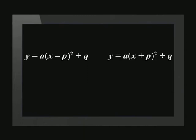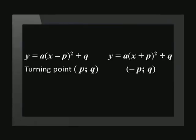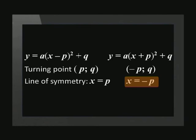Remember, the standard form that you are required to use has a plus p. This form of the equation has an effect on the equation of the axes of symmetry, and thus the coordinates of the turning point. The coordinates of the turning point will be negative p, q, instead of positive p. And thus, the equation of the axes of symmetry will be x equals negative p.